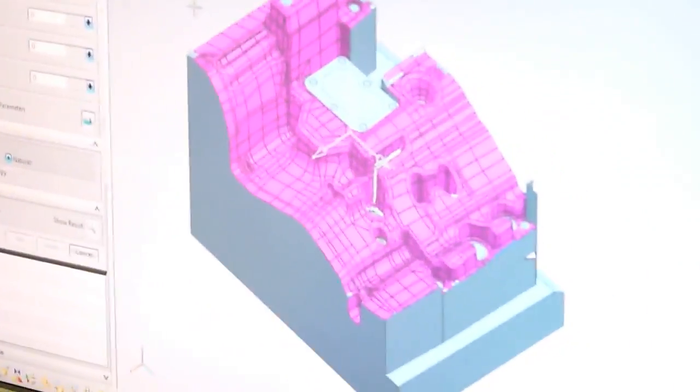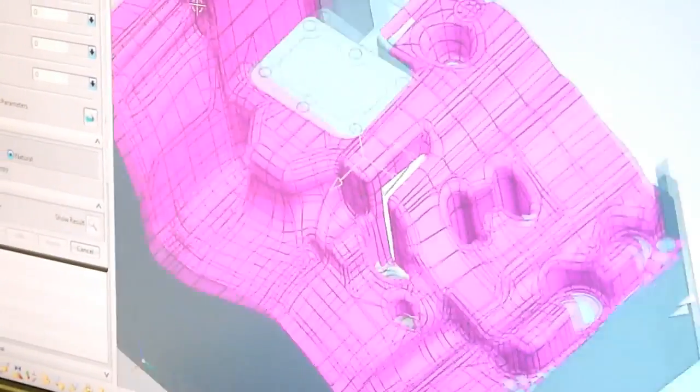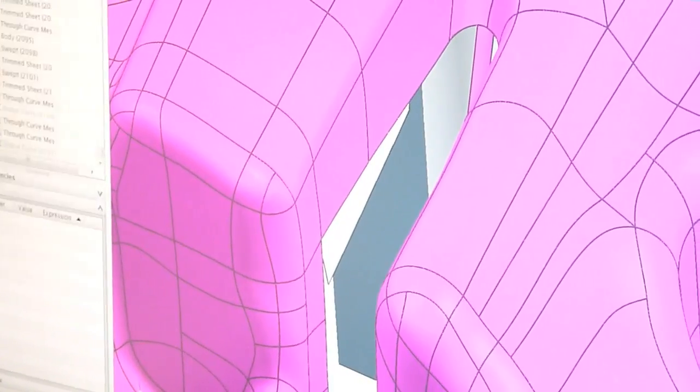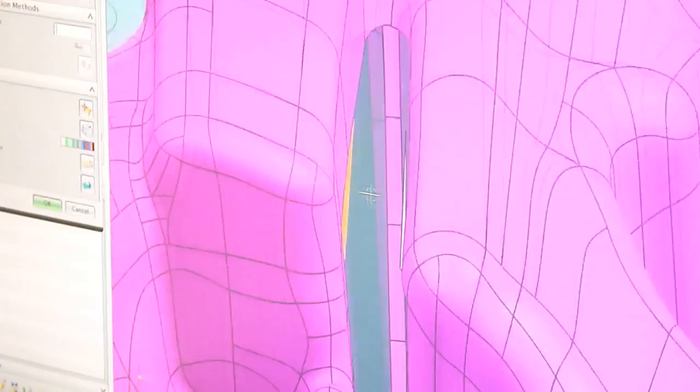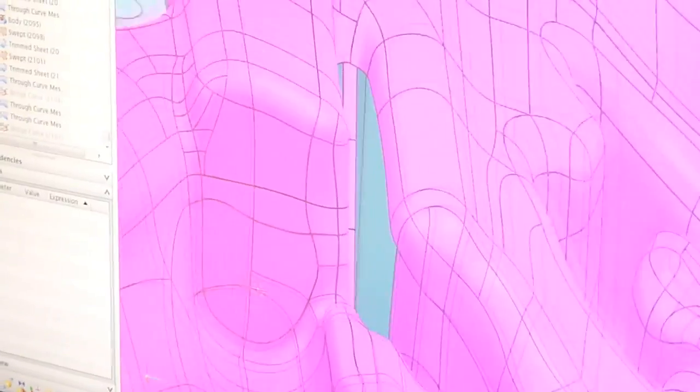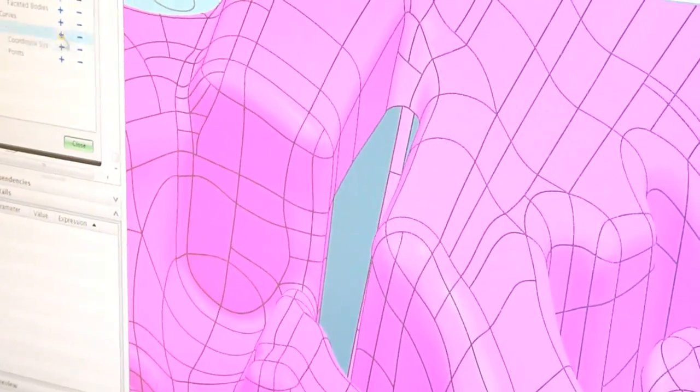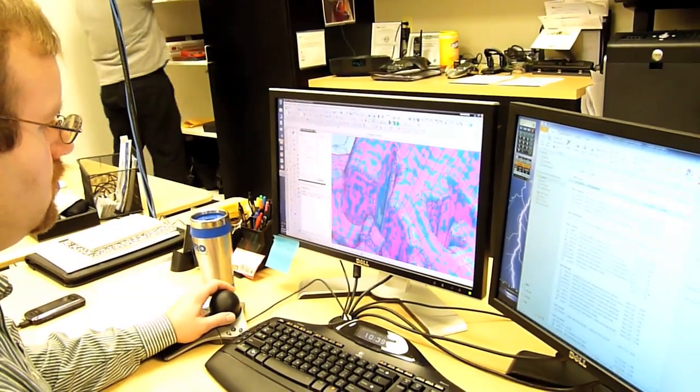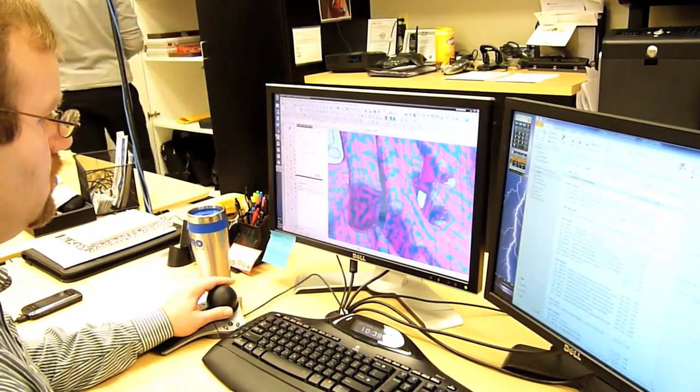For as-built models, we would use a NURBing process. And this is a process where we would take the output of the point clouds, create a polygonal model, which we could also export as an STL. And we take that, create a curved network, create patches on that curved network, and export those NURBS patches into a CAD system and deliver it to you.